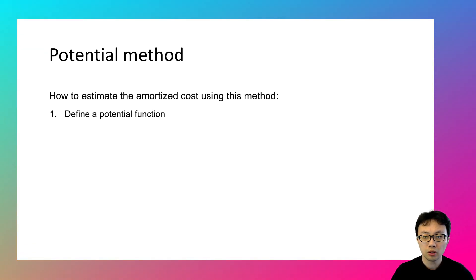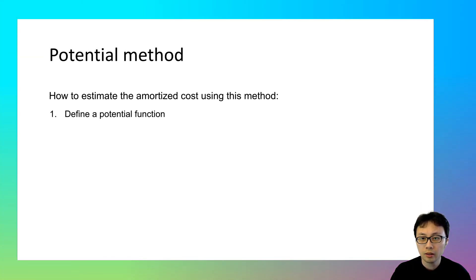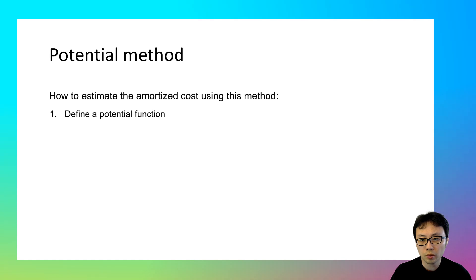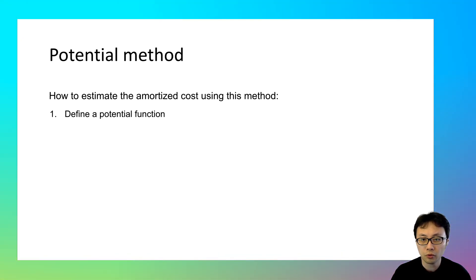The first step is to define a potential function. Think of it like a way to store energy in a spring. Each time we do a simple operation, it's like compressing the spring a little bit, storing energy. Later, when we need to do a more expensive operation, we can release that stored energy to help pay for it.